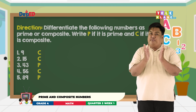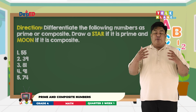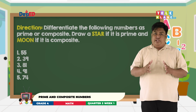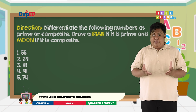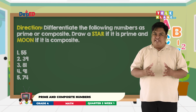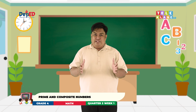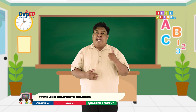Let's all give a hand to everyone. Well guys, I hope that everyone got a perfect score. Now, before we end our discussion today, I want you to copy the given and do this task. You will differentiate the numbers as prime or composite. Draw a star if it is prime, and draw a moon if it is composite. You all did a great job today, guys. And again, I am your teacher, Sir Emil, and I will be with you on our next Math Ventures. Bye!